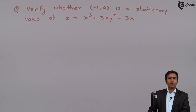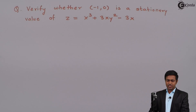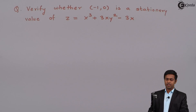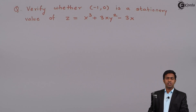Hello everyone. In this problem we have to verify whether minus 1 comma 0 is a stationary value of the function z equal to x cube plus 3xy square minus 3x or not. To verify whether minus 1 comma 0 is a stationary value or not, we have to check certain conditions.